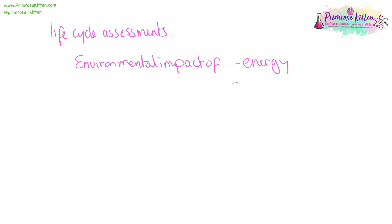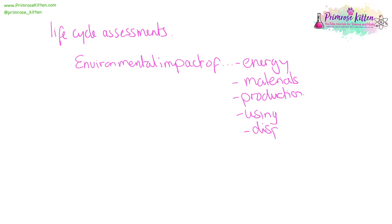Consider the materials used — whether they can be sourced from natural resources or whether something else can be used, and whether natural resources have to be further processed. Consider the production of the product: things like atom economy — how much of the reactants are actually going to end up in the product, how much waste there is, and how much waste of the natural resources that went into making the product.